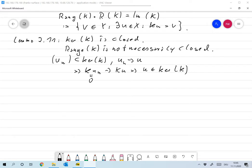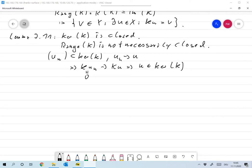Now, the range is not necessarily closed. We just need an example for that. And for example, take X as l2 and Y is l2 over R or N.